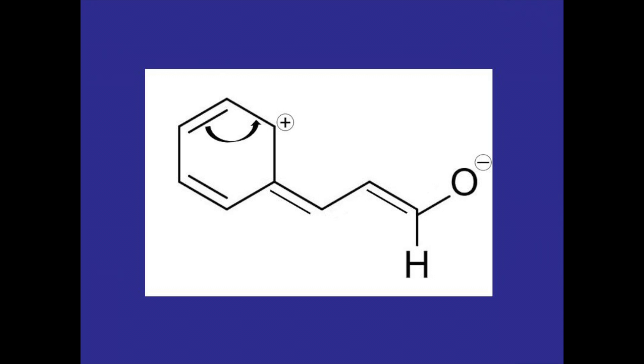As we do this we can see that certain carbons have positive charges placed on them. So if we look at the hybrid structure, any of the carbons that had a positive charge placed on them in one of the resonance structures would now have a partial positive charge placed on them. This means that these carbons and the hydrogens attached to them would be more deshielded because they have less electron density around them to shield them from the applied magnetic field.